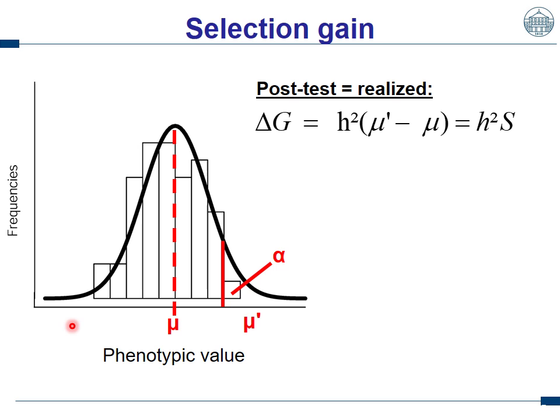All genes have a small effect, like for grain yield, and then we get for the phenotypic values a distribution close to a normal distribution — with few individuals with very poor performance, few with very good performance, and most of them intermediate. The selection gain is when we select the better fraction, called alpha, the selected fraction. This has a mean value, and when we subtract this mean value by the population mean, this is called the selection differential. When we multiply this difference by the heritability, we get the selection gain.